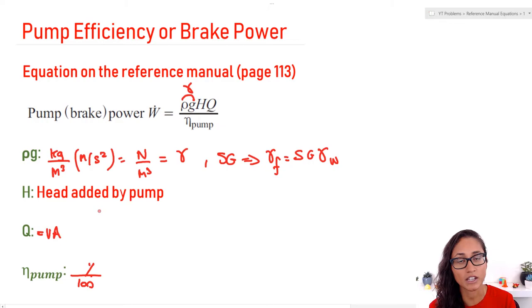So the second term H, H is the head added by the pump. Usually when we use a pump is to add or increase energy to the fluid. If you guys want to see a problem on how we calculate head added by pump, leave it in the comments below. So Q is the flow rate of the fluid, and usually it is provided to you. It's not like H where you actually have to calculate for it.